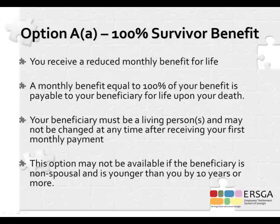Option AA allows the retiree to take a reduced monthly benefit for life. The reduction allows the named beneficiary or beneficiaries to receive a lifetime check equal to 100% of the benefit the retiree was receiving. A living person must be named as beneficiary. With multiple beneficiaries, each receives a partial amount based on their respective life expectancies. Option AA is not eligible if the named beneficiary is non-spousal and younger than the retiree by 10 or more years, and the beneficiary cannot be changed after the first PSERS payment.